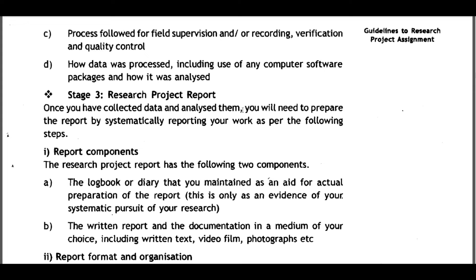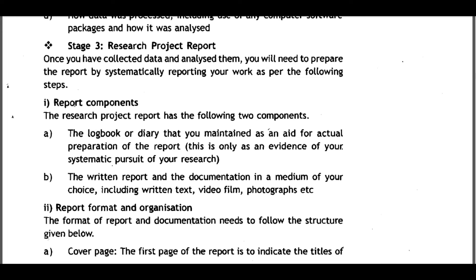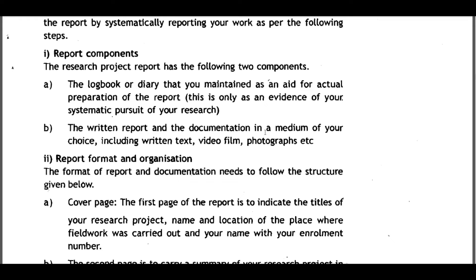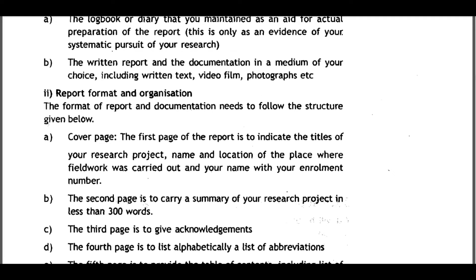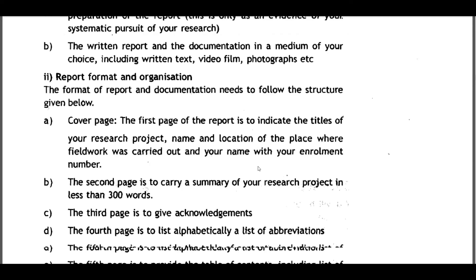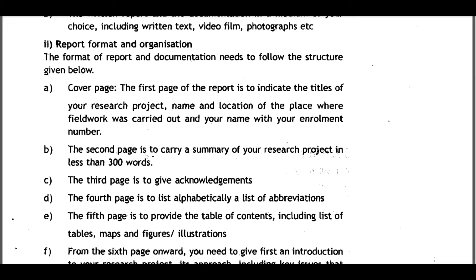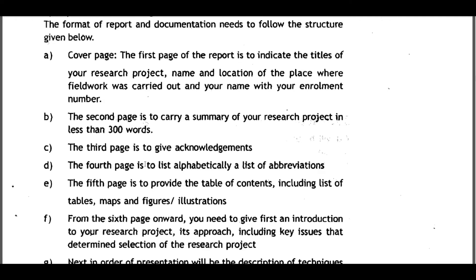Stage three: Research Project Report. Once you have collected and analyzed data, prepare the report systematically. The report has two components: (a) the logbook or diary maintained as an aid for actual preparation of the report — evidence of your systematic pursuit of research; and (b) the written report and documentation in a medium of your choice including written text, video, film, photographs, etc. The cover page should indicate the title of your research project, name and location of the field, and your name with enrollment number. The second page carries a summary of your research in less than 300 words.